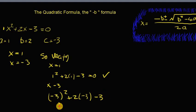Minus 3 multiplied by minus 3 is 9. 2 multiplied by minus 3 is minus 6 minus 3, and that indeed does equal 0.